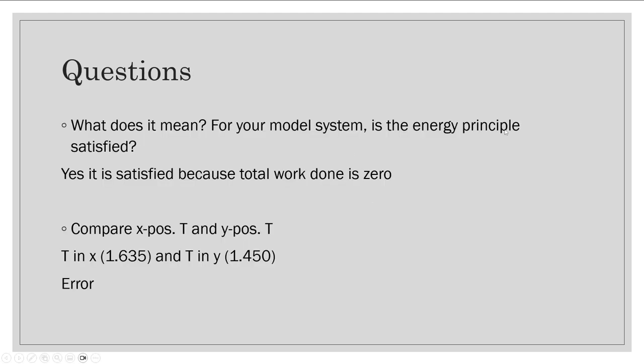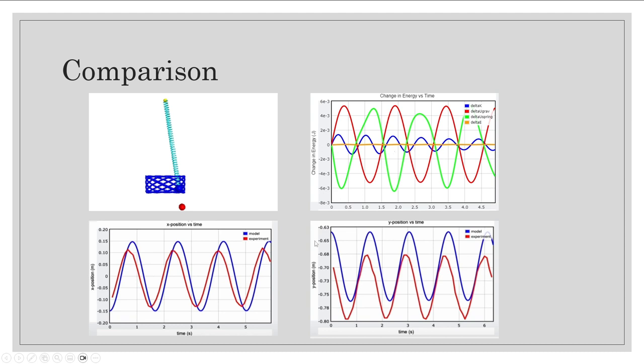What does this mean? For your model system, is the energy principle satisfied? Yes, as we said earlier, the total energy is zero. We know that because potential energy equals kinetic energy, and it should be zero. We can also look at the graph and see this orange line is always zero.